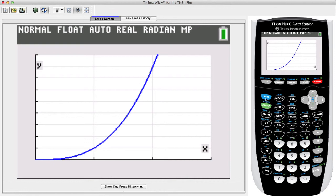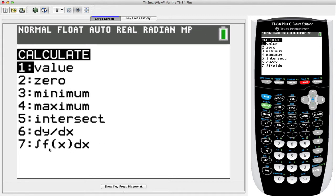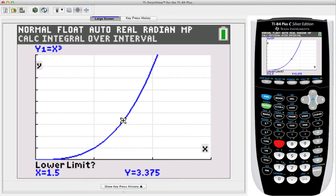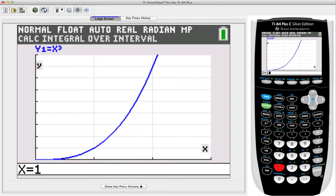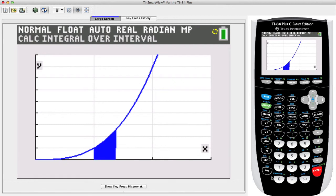Now let's press second and then trace to get to the integration function, which is at number 7. The lower limit for this problem was 1, so I press enter, and then my upper limit was 2, and I press enter again.